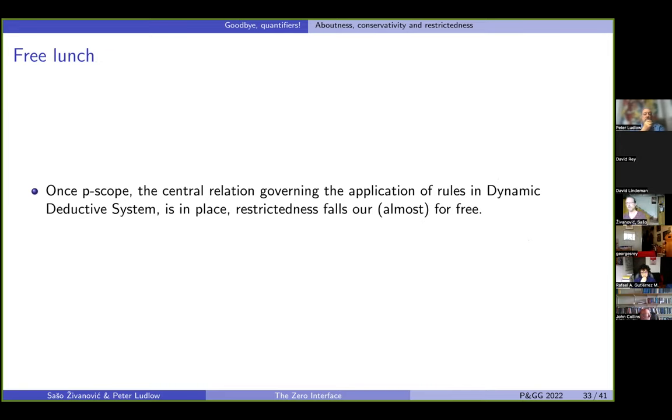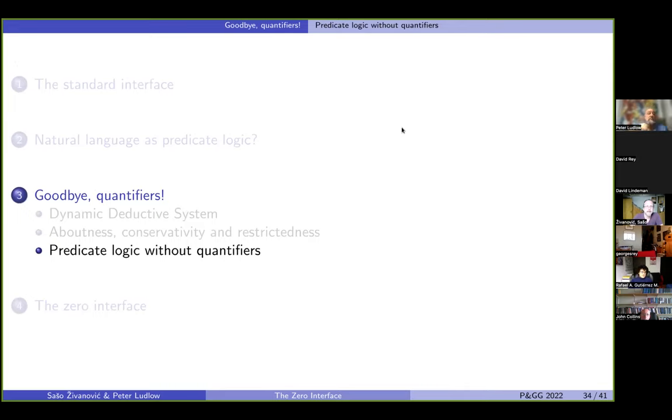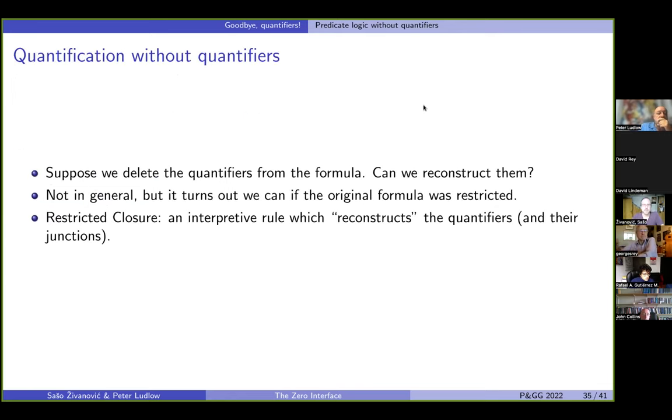So, note that we have developed pscope because we use it in our deductive system. It has nothing to do with restrictedness. But now it turns out that we can use pscope and our friend Percival in determining restrictedness. So basically, restrictedness, we get it for free. And once we have restrictedness, we can actually get predicate logic without quantifiers.